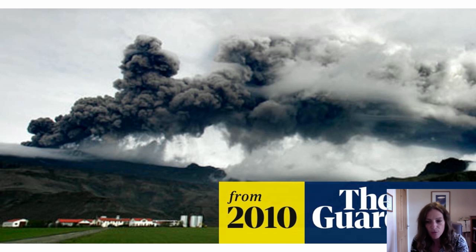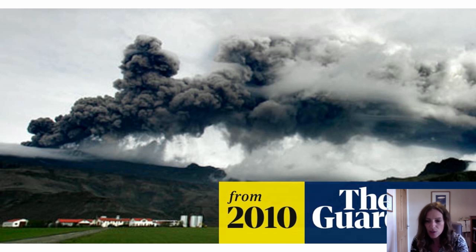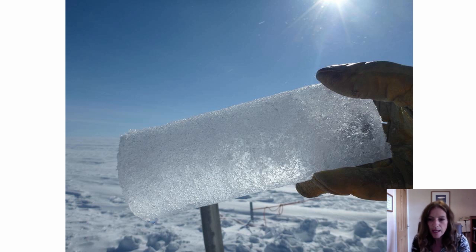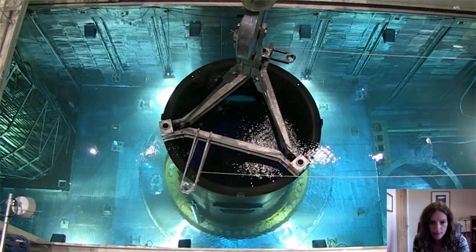How can we forecast volcanic ash over Europe and protect human health? This image shows an ash cloud generated by a volcano in Iceland in 2010 that shut down aviation over Europe for several weeks. What do ice cores tell us about climate change? Detailed study of oxygen isotopes and the chemical constituents of tiny gas bubbles in ice tell us about past atmospheres and ice sheets.